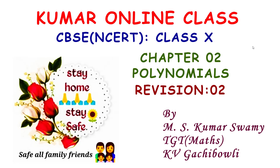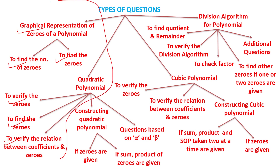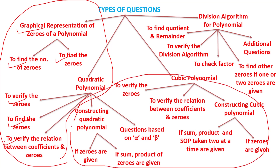Today we are going to start Revision 2 of Chapter 2, Polynomials. Let us see which topics we covered in Revision 1. Graphical representation of zeros of polynomials we have covered, along with these two topics. For quadratic polynomials, we covered how to verify the zeros, find the zeros, and verify the relation between coefficients and zeros.